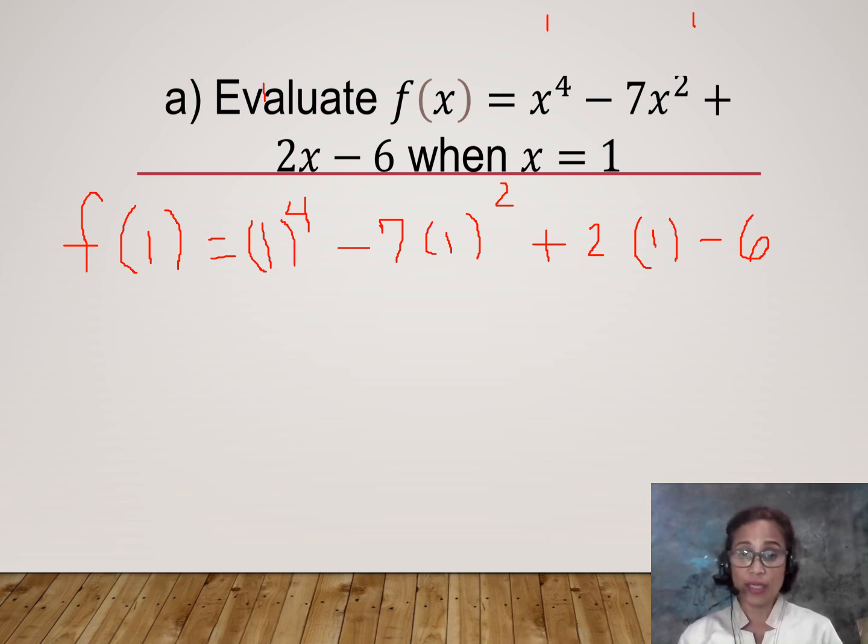You can actually get an instant answer by using your calculator, but I am going to show you how to do this manually. So 1 raised to the fourth power is simply 1, minus 1 squared is 1 times negative 7 is 7, plus 2 times 1 is 2, then minus 6.